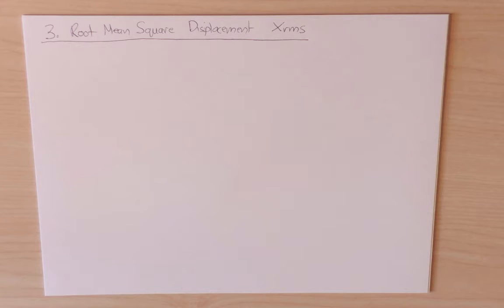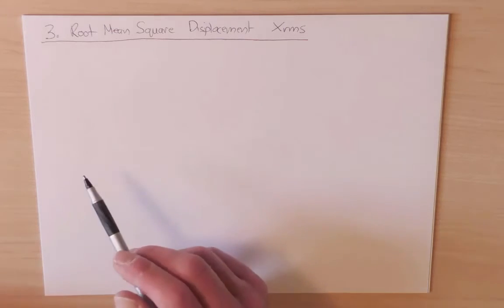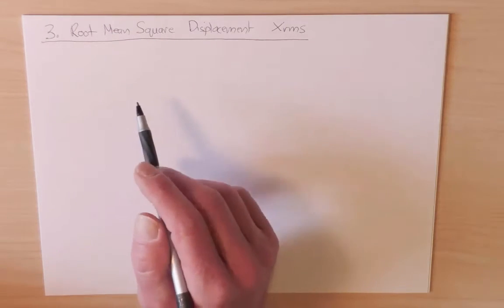As the first step in understanding the properties of the random walk, let's compute how far a random walk goes as a function of the number of steps in the walk. This is encapsulated by a quantity known as the root mean square displacement.